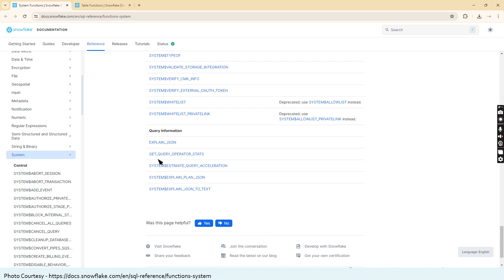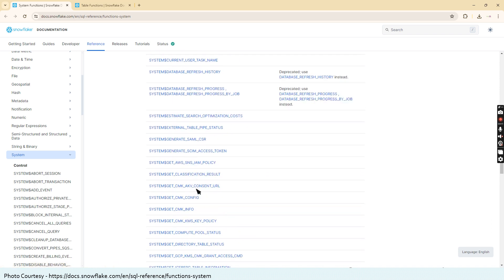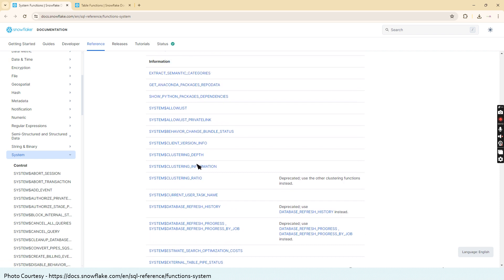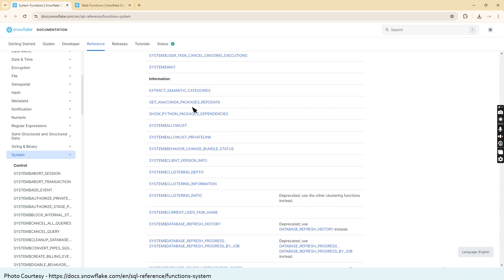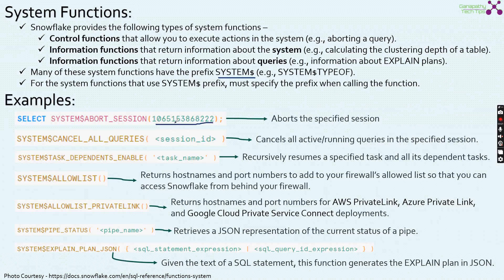Here if you see query information, explain JSON is not starting with system dollar, get query operator status is also not starting with system dollar. So these much amount of system functions are available within Snowflake. So please spend some time understanding this specific Snowflake documentation.